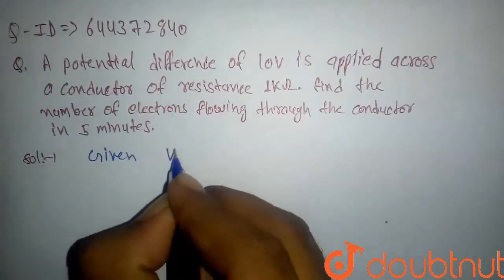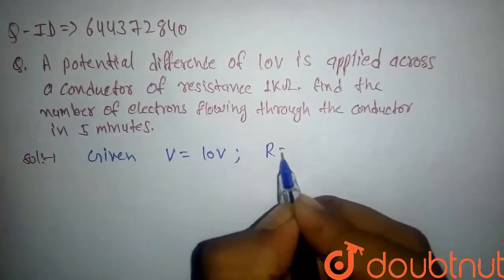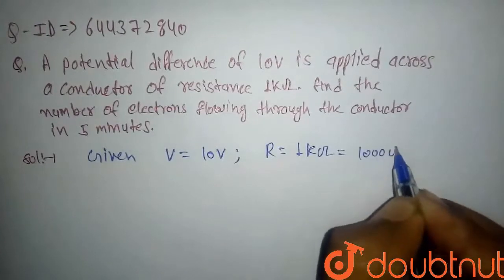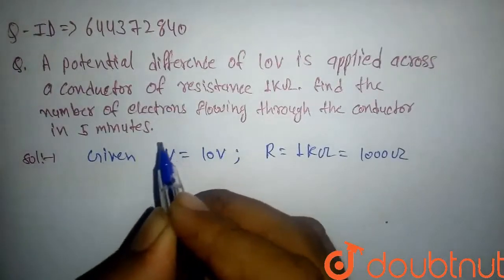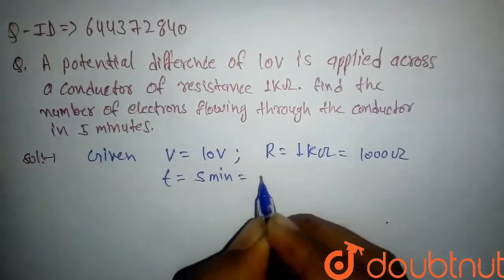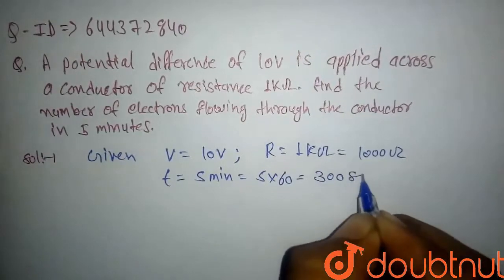Given: Voltage V = 10 volt, and resistance R = 1 kilo-ohm, which we can write as 1000 ohm. Also, we have time t = 5 minutes. If we convert to seconds, it will become 300 seconds.